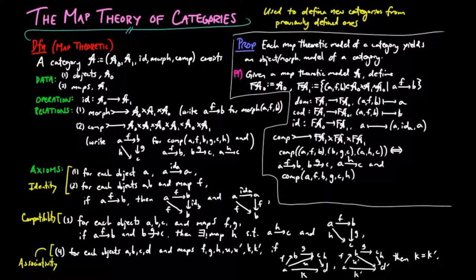and comp(AFB, BGC, AHC) holds. Then it can be easily shown that F(A) is an object morphism model of a category.